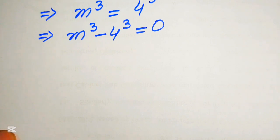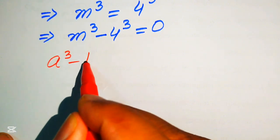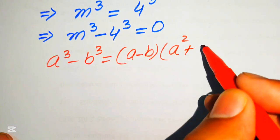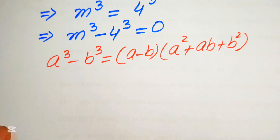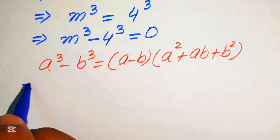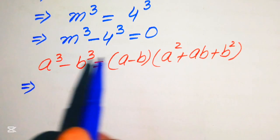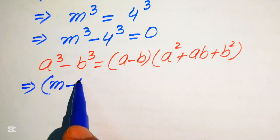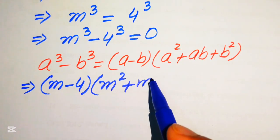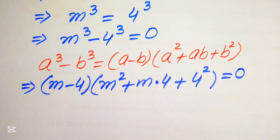In the next step we apply the cubic difference formula: a cubed minus b cubed equals (a minus b)(a squared plus ab plus b squared). Here our a equals m and b equals 4, so we substitute these values into the formula to expand the equation.